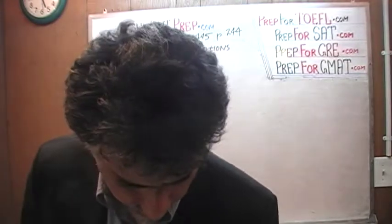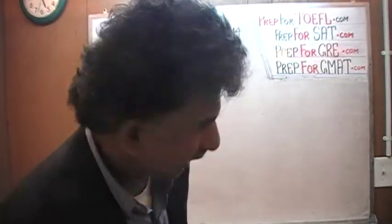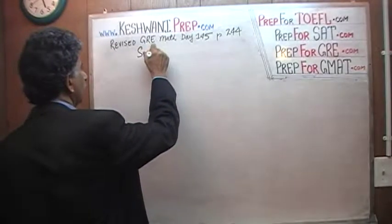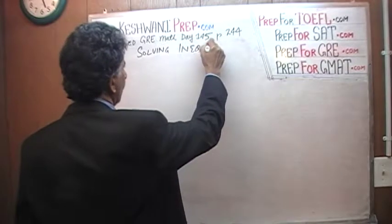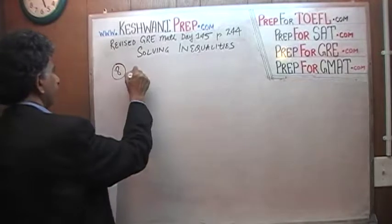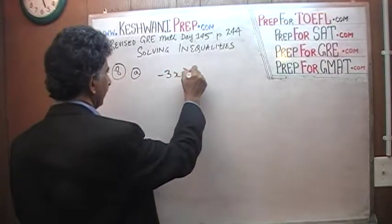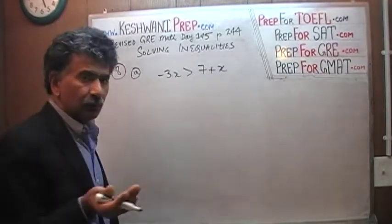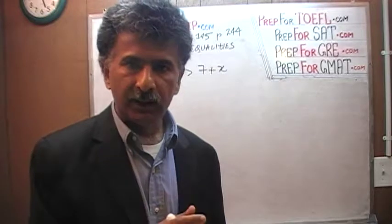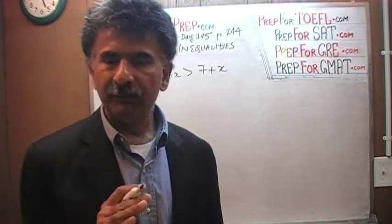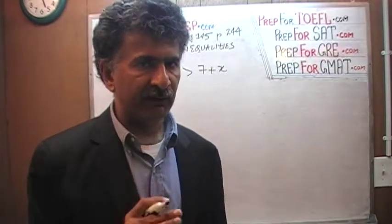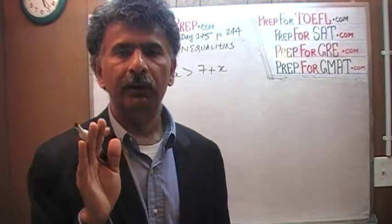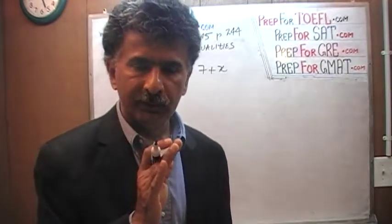Problem number 7, where we are given some inequalities and our job is to solve them. This should not say simultaneous equations — it should say solving inequalities. Number 1: we are told that 3x is greater than 7 plus x. It's a very straightforward situation. The rules of how you handle an inequality and how one handles an equation are no different, with only one exception. Everything else that you can do when solving equations, you can do when solving an inequality.